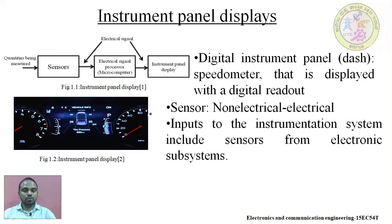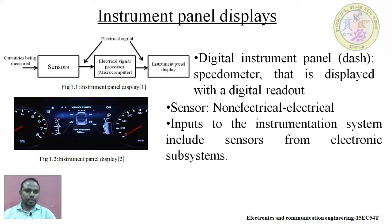Now we will understand the basic block diagram of the instrument panel display. This is the pictorial representation — on the left side one panel indicating RPM, and on the right side a panel showing MPH (meters per hour) for speed. There is also a battery level indicator, a fuel level indicator, and in the middle section it shows the air pressure level in all four wheels indicated in MSI.